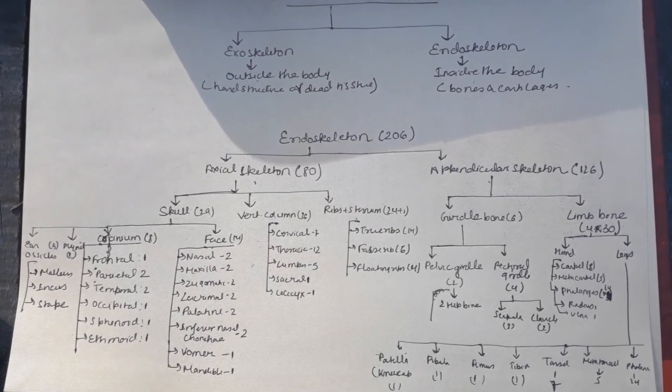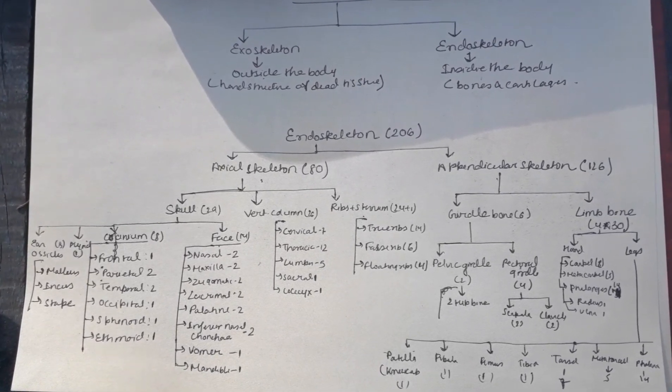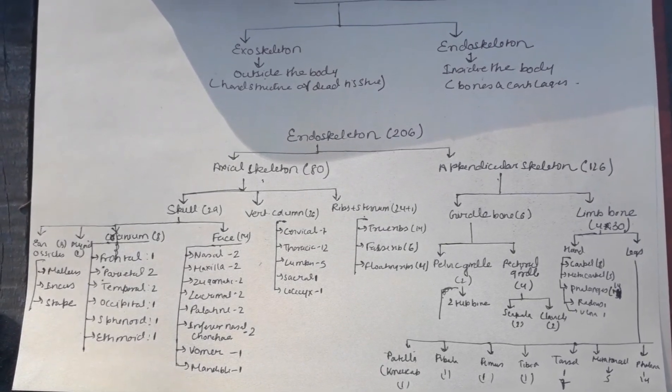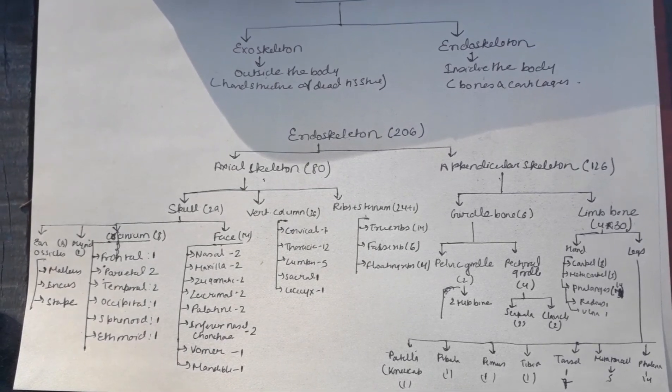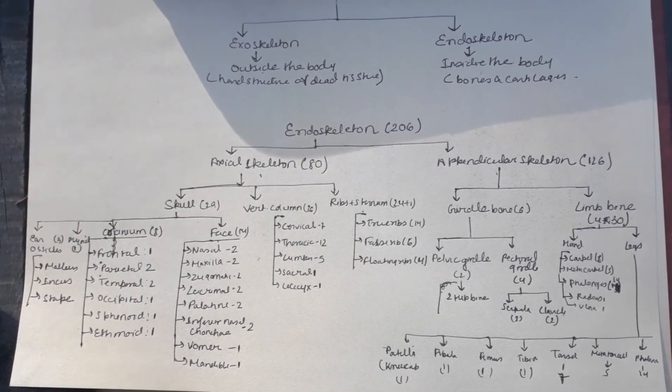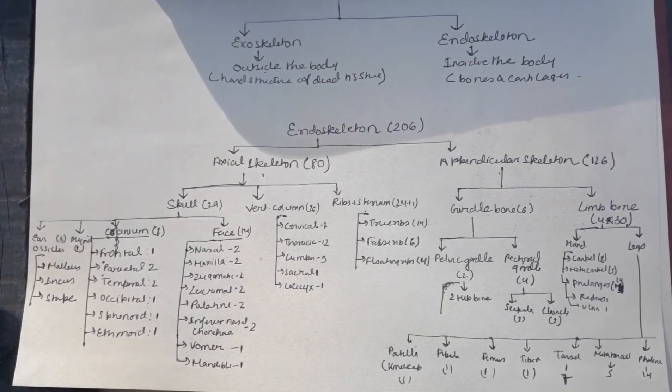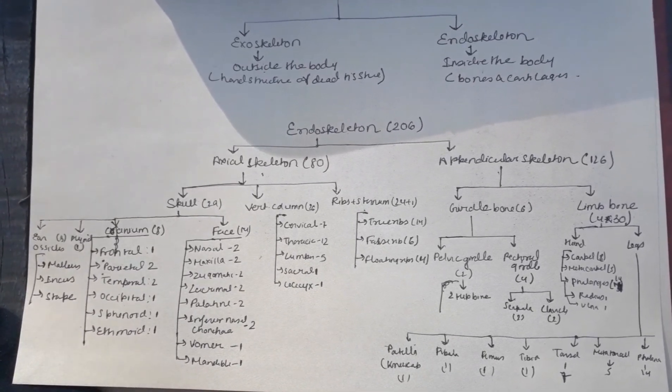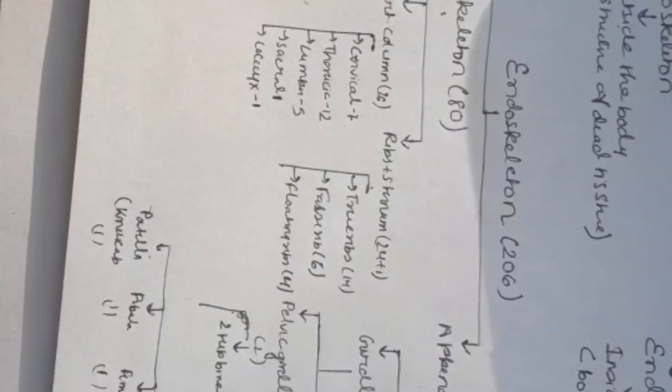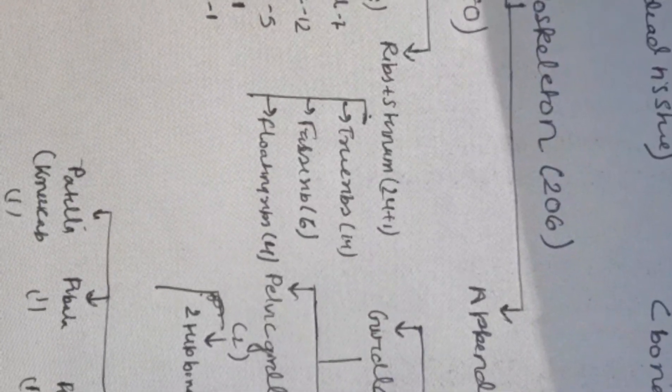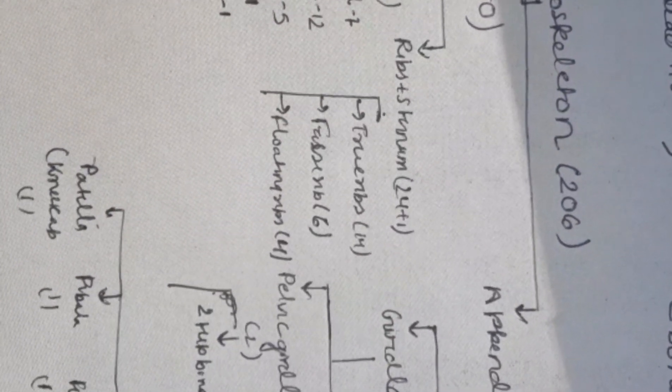The axial skeleton is divided into three groups: first skull, which includes 29 bones; vertebrae, which include 26 bones; and rib plus sternum - ribs include 24 plus 1 sternum. The appendicular skeleton is divided into two: girdle bones and limb bones.